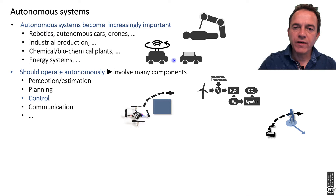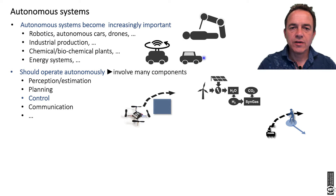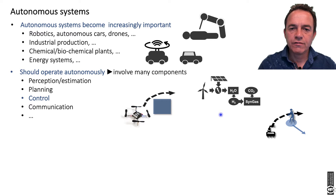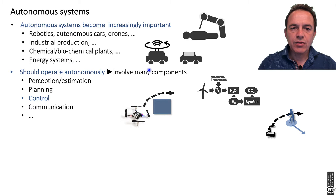If you look at today's environment, you actually see a lot of autonomous systems popping up. For example, autonomous cars with lidar or camera systems that should go along a road. You might have a medical robot performing an operation, or a drone following a certain track, or even a chemical plant producing synthetic gas from electrical energy. There are many things involved if you want something like this operating autonomously.